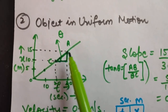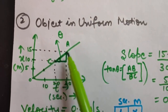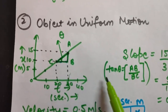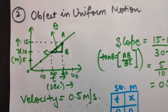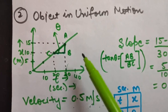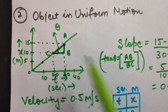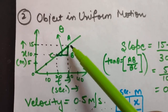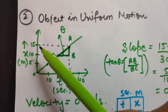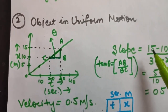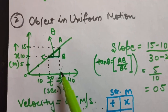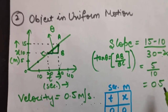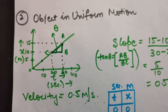Using the two points, we form a triangle with angle theta. Tangent theta equals perpendicular AB over base BC. AB equals 15 minus 10, and BC equals 30 minus 20, so the slope comes out to be 0.5.